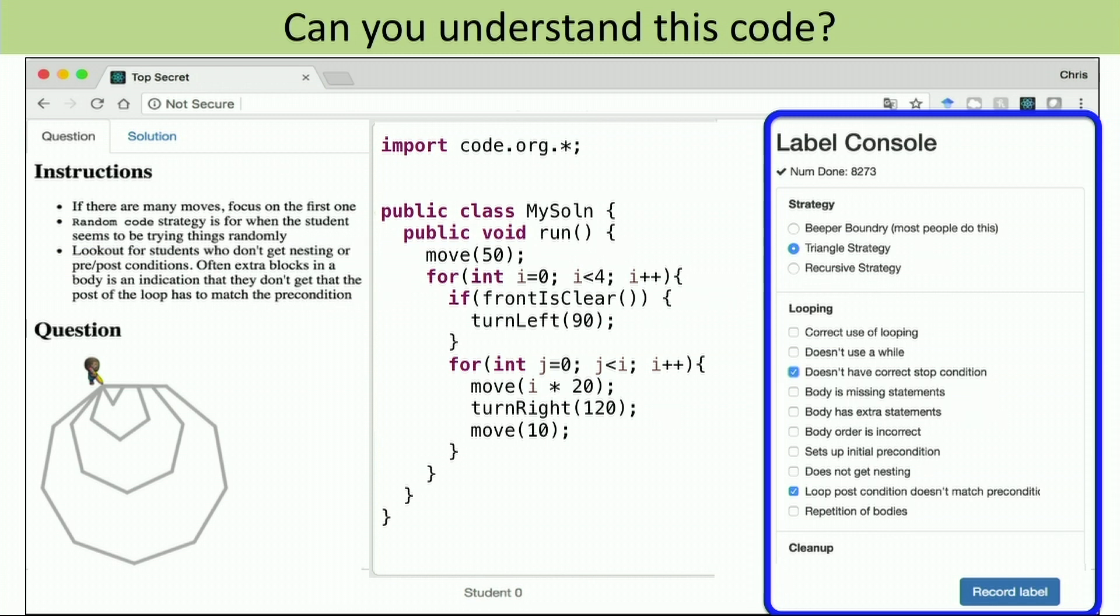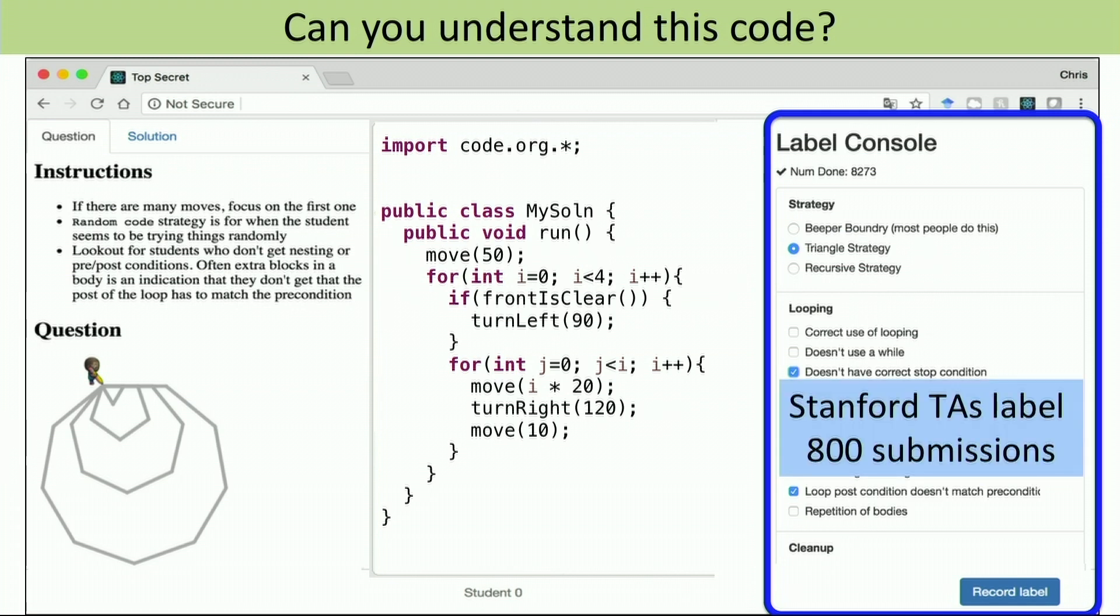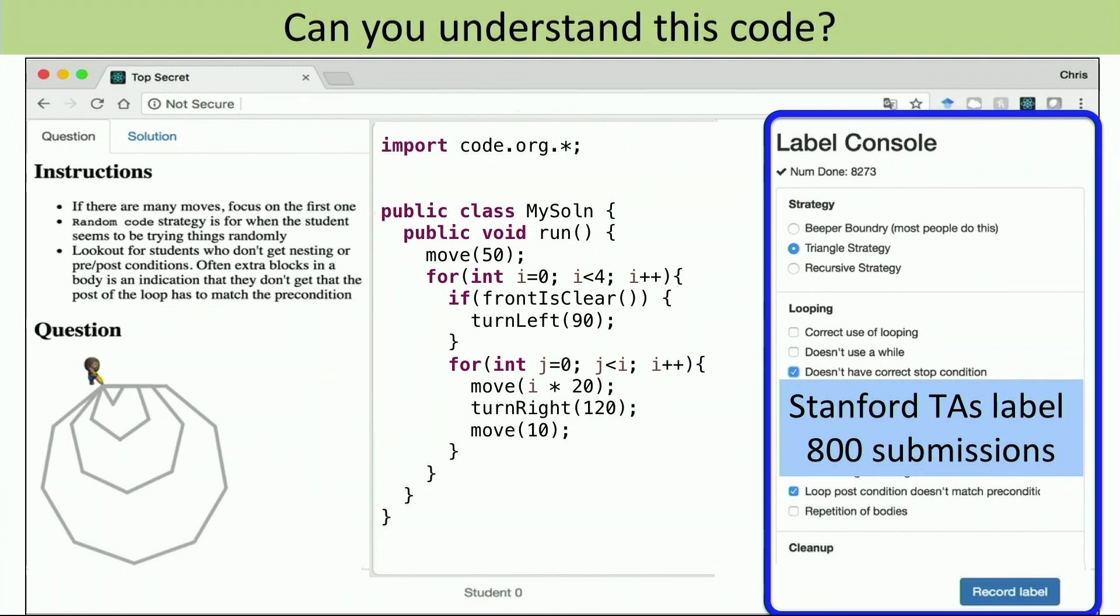We would give them the problem, we would give them one of the students' codes, and we would ask the TAs, can you give feedback to the student? In this case, feedback was the form of there's about 20 different things you might want to tell a student. Can you check those boxes for those 20, or out of those 20 things, what would you tell this particular student? It's a hard task.